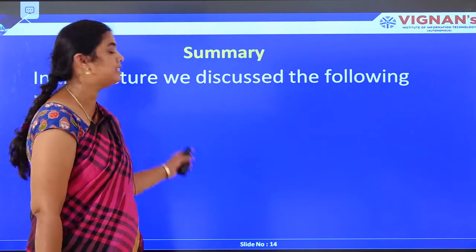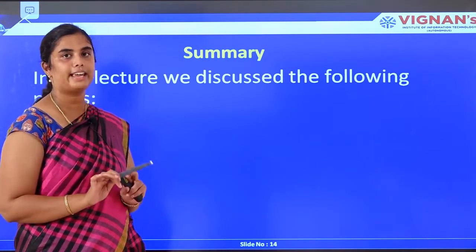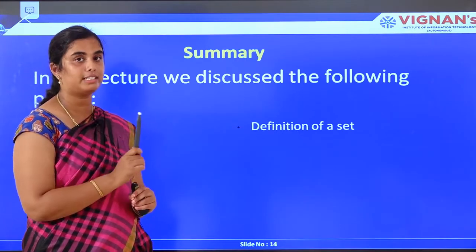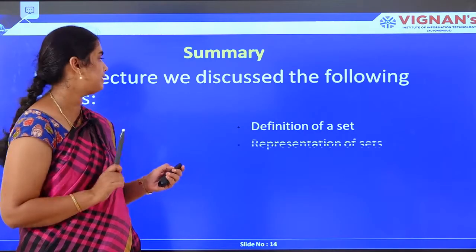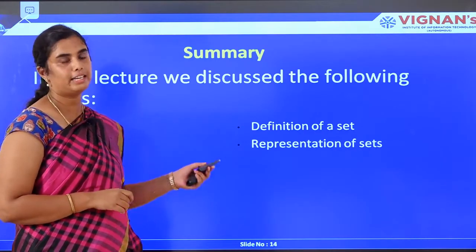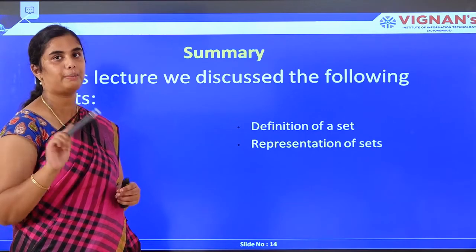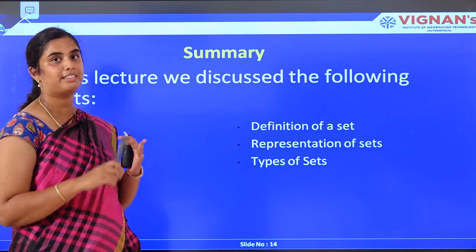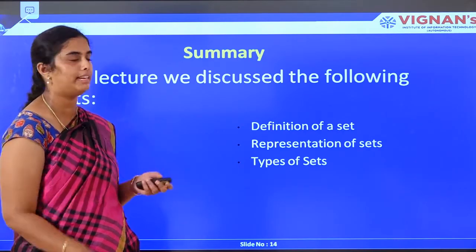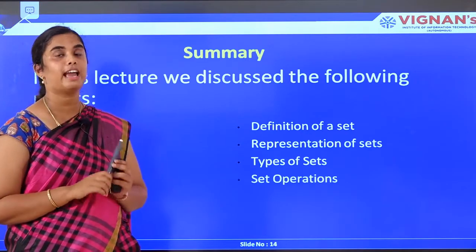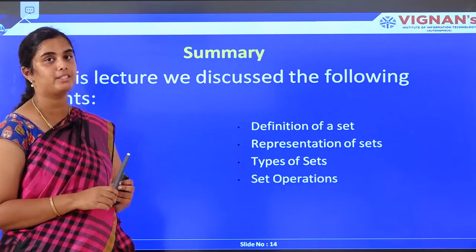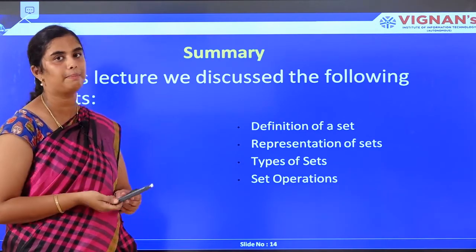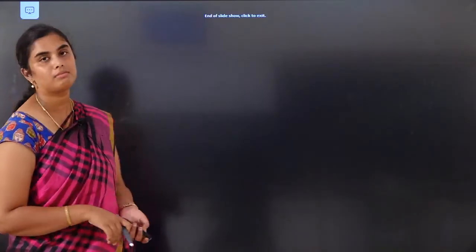To summarize, in this session we covered: the definition of a set and how a set can be represented, the three ways of representing sets, the different types of sets such as equal sets, equivalent sets, and finite sets, and the four set operations — union, intersection, complement, and difference. Thank you.